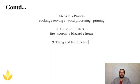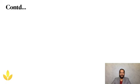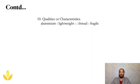Thing and its function — like a product and what job it does. Scissors is to cut as pen is to write. Or a phone is to call and a pointer is to track. Next, qualities or characteristics: aluminium is usually lightweight whereas a thread is fragile. We are comparing the characteristics of the product — aluminium's quality is that it is very light in nature, while a thread is much smaller and fragile.